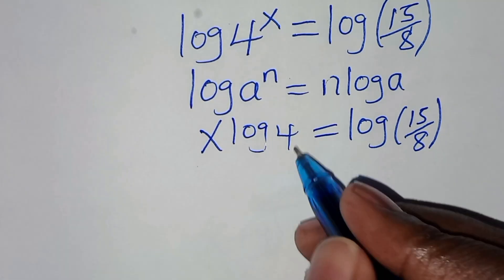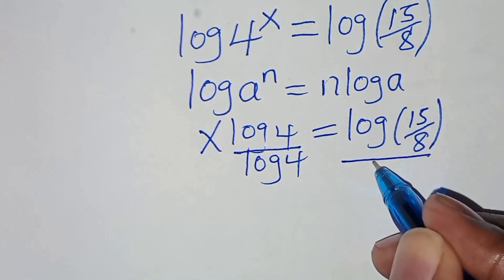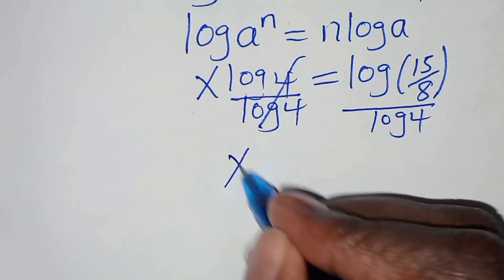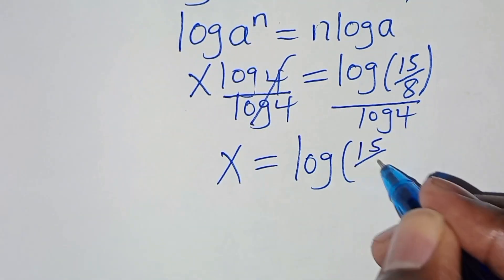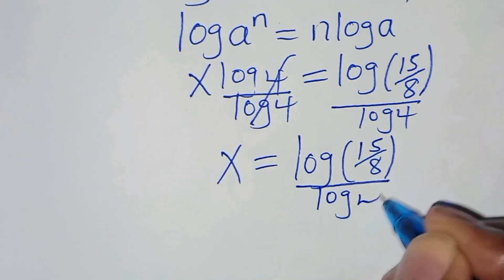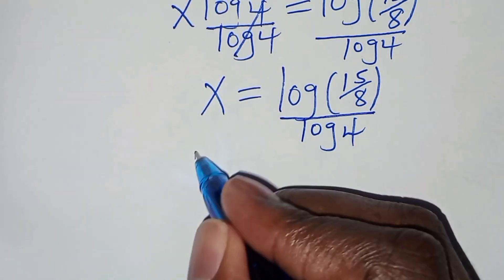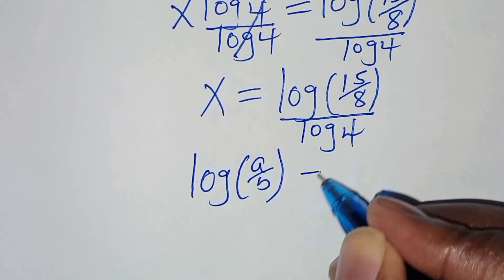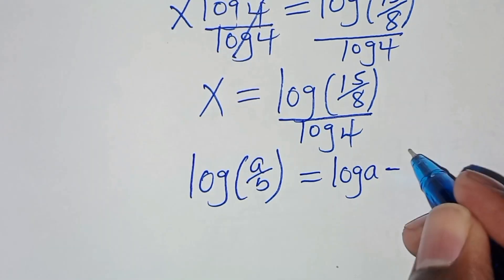The next step is to divide both sides by log 4, so that now x is equal to log(15/8) divided by log 4. We find that log(15/8) is in the form of log(a/b), which we can express as log a minus log b.